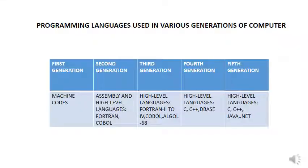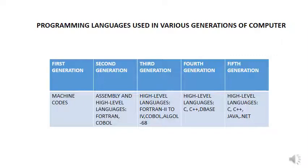Now let's have a look at programming languages used in various generations of computers. In the first generation, computers used machine codes as language. In the second generation, assembly and high-level languages were used — for example, Fortran and COBOL. In the third generation, high-level languages were used, namely Fortran, COBOL, and ALGOL.